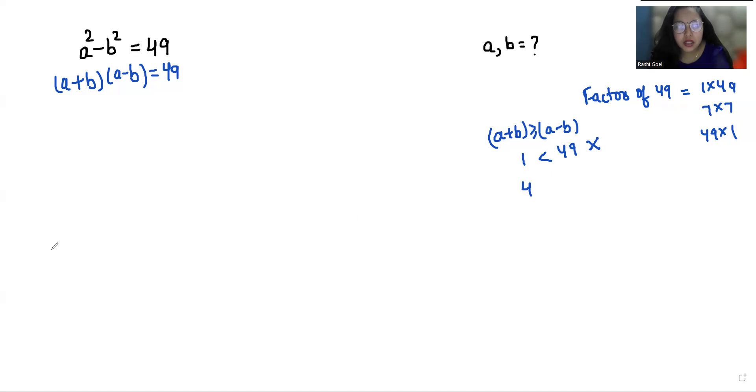If I take 7 and 7, they can be equal, so we can take this case. Another case is 49 and 1—here 49 is greater, so we can take this case also.